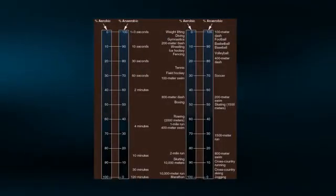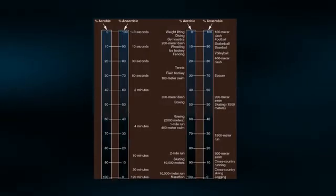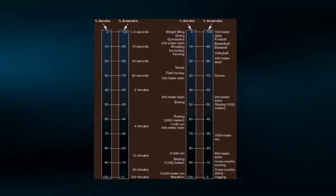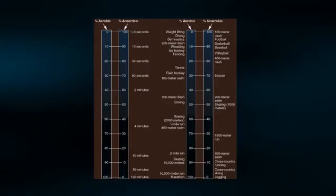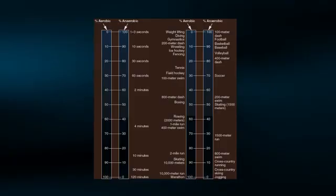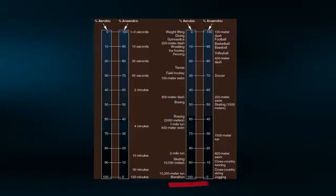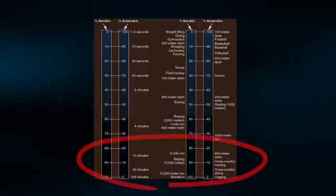This is what an isolated mitochondrion looks like in a muscle cell. If the bulk of the energy needed for a specific athletic event comes from the mitochondrial ATP production, it is considered to be an aerobic activity because oxygen is both required and consumed. Endurance activities lasting 10 minutes and longer fall into this category.